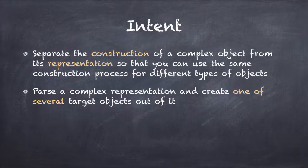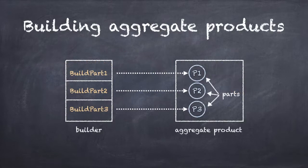Or, you want to parse a complex representation — let's say an XML file — and create one of several target objects out of it. In the first case, you have some kind of complex object. In the terminology of this pattern, we call the object a product. Usually the product will be an aggregate object, meaning it is an object composed of two or more child objects. We call these child objects parts.